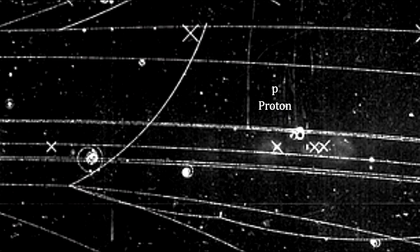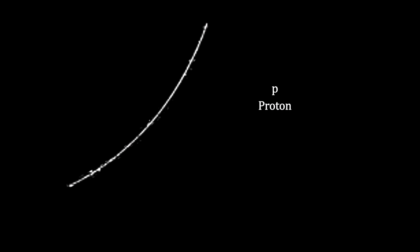In this bubble chamber photograph from CERN, we see a particle's track rotating counterclockwise. This indicates that it is positively charged.